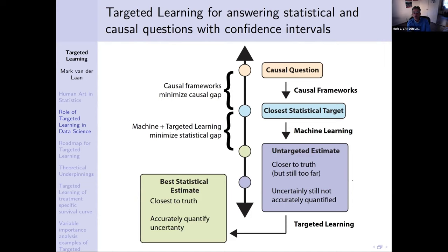You have a way of describing an underlying world where you would collect the full data you really would have liked, such as for every person the potential outcome under treatment and potential outcome under control. You might want to know the difference of that and take the mean. That would be an example of a causal quantity defined in an underlying world where you have more data than you really collected. It's very helpful to have that language to collaborate and discuss with collaborators and come to agreement on what the question really is.